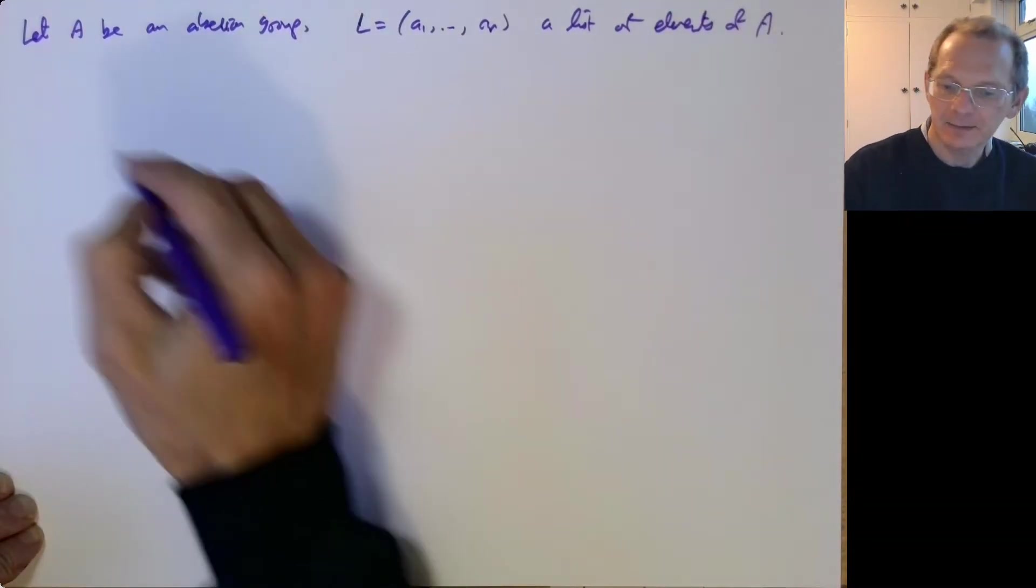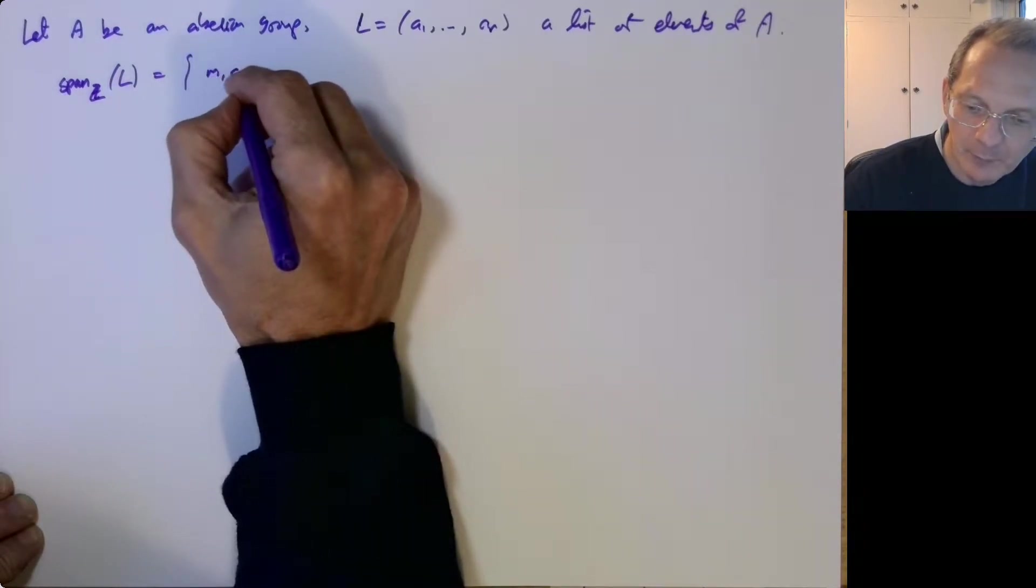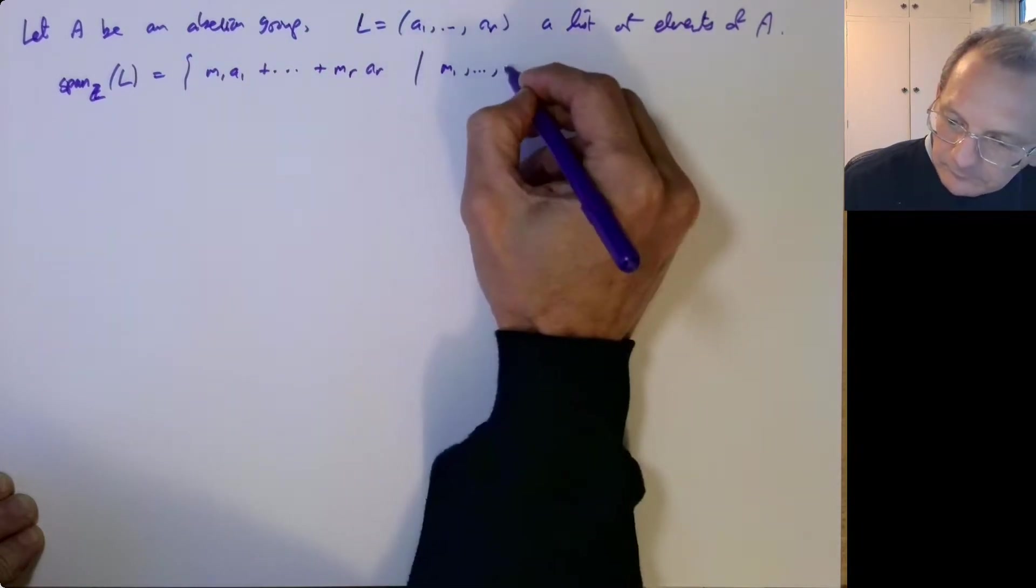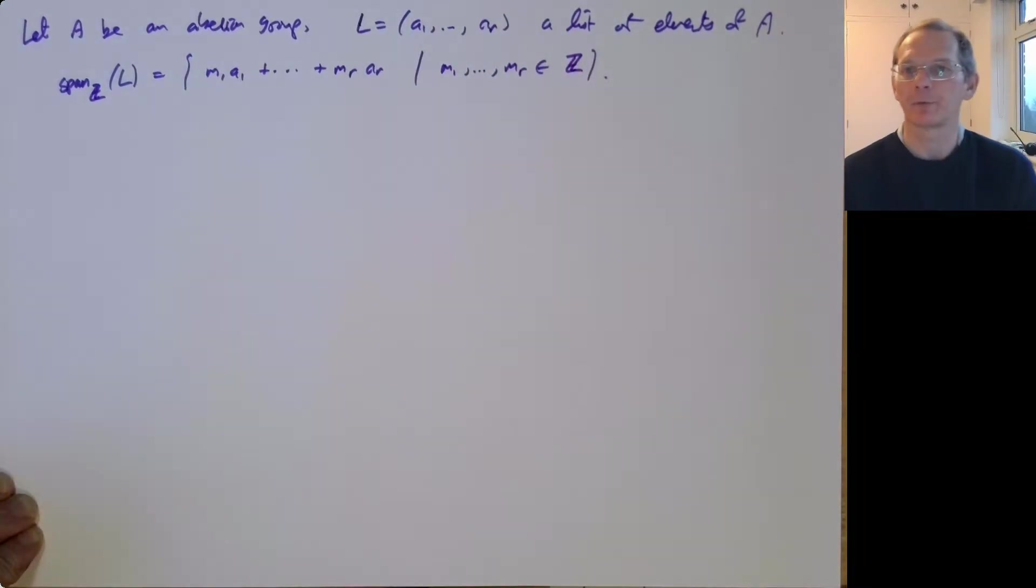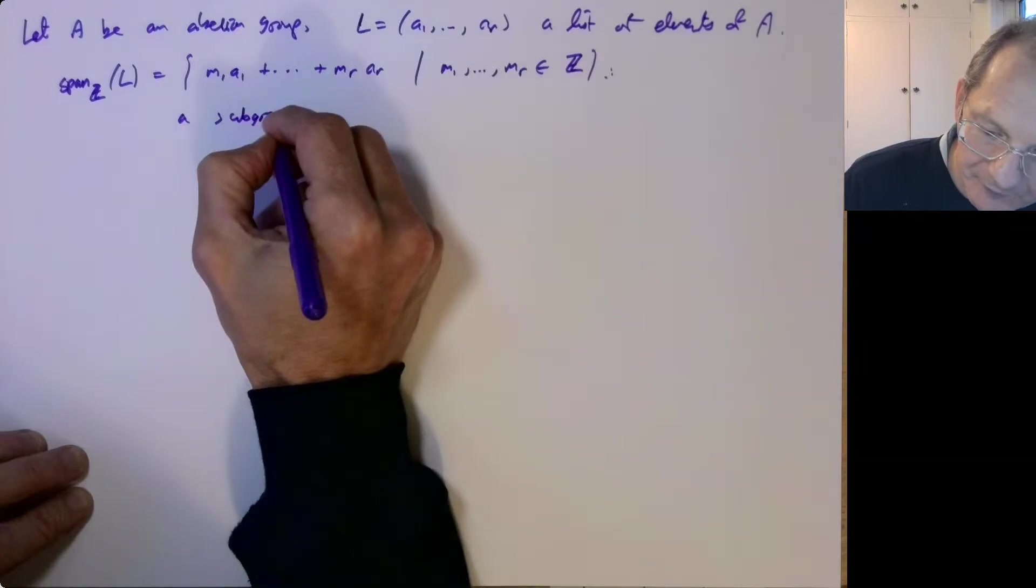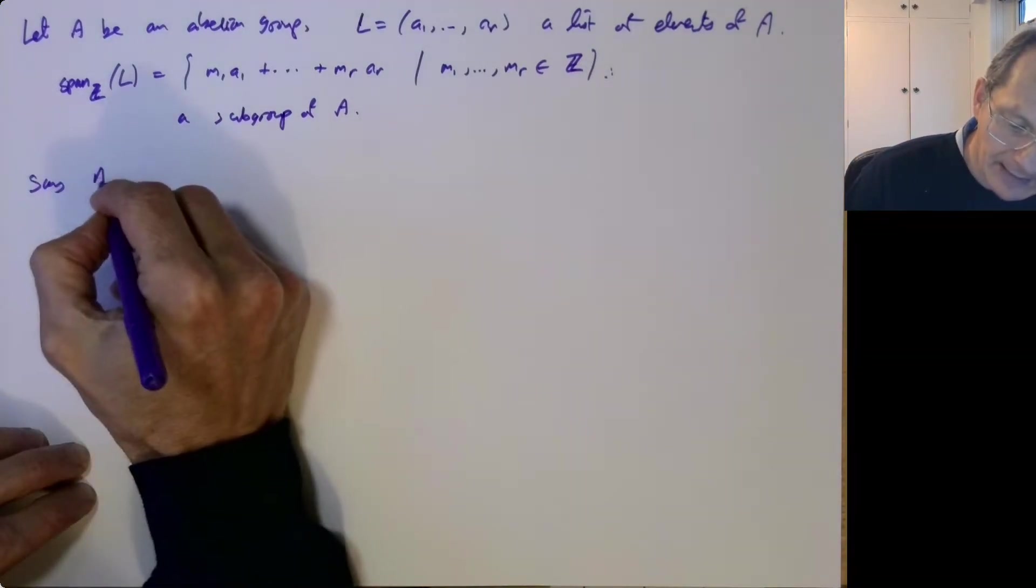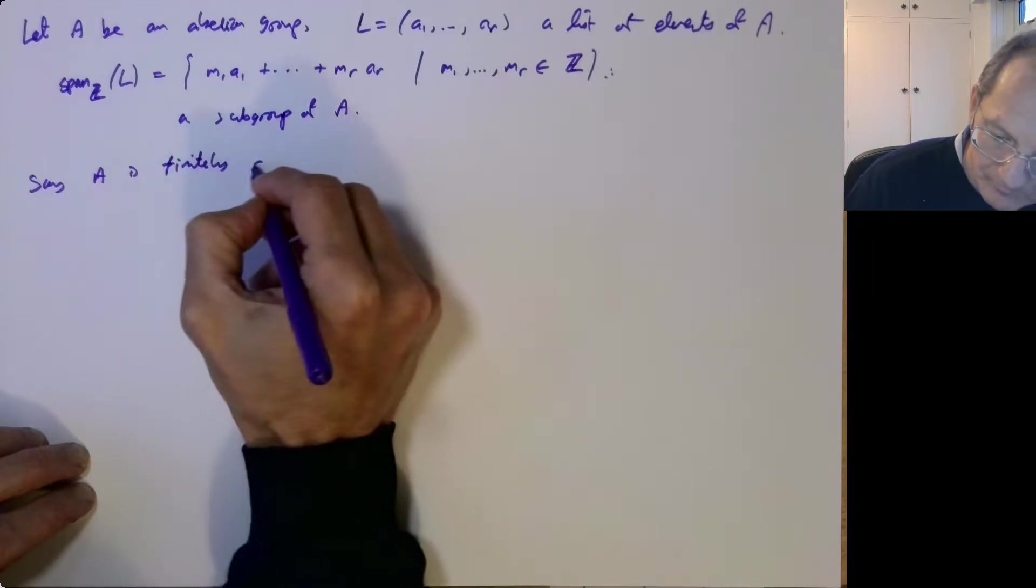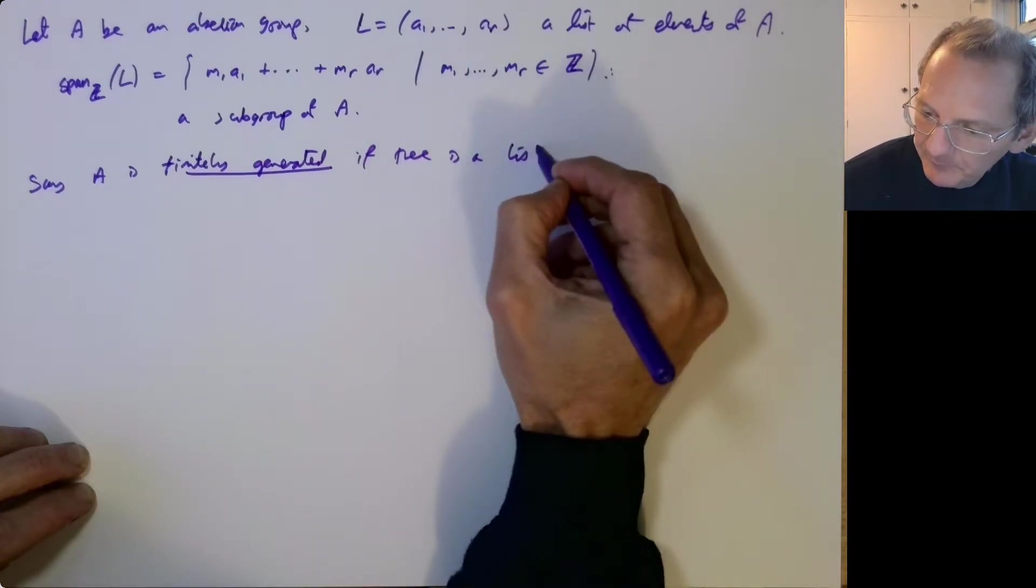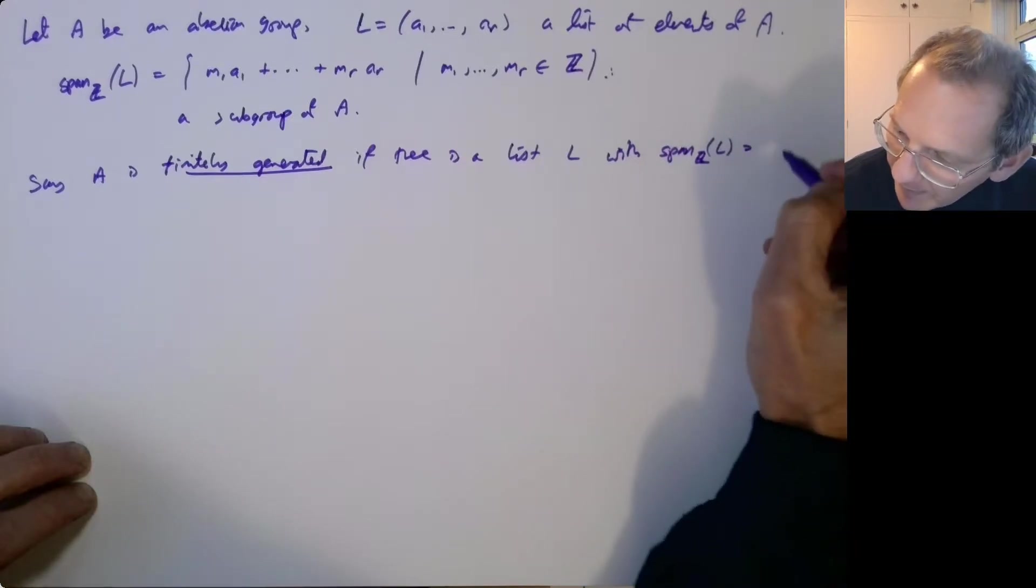Then we can consider their span over Z of L, that's the set of things of the form M1A1 up to MRAR, where these coefficients MI are all supposed to be integers. So this is easily seen to be a subgroup. And we say A is finitely generated if there is a list L as above where the span of the list is the whole group.